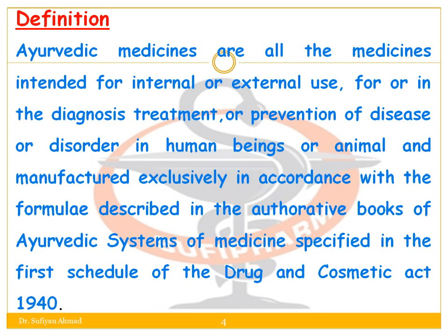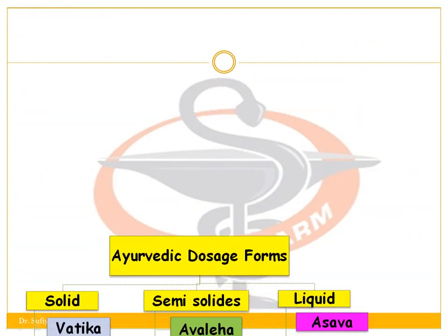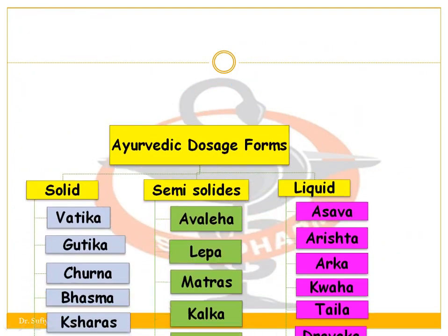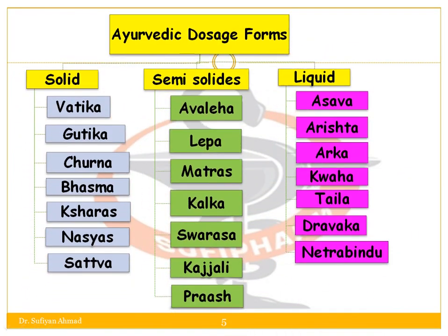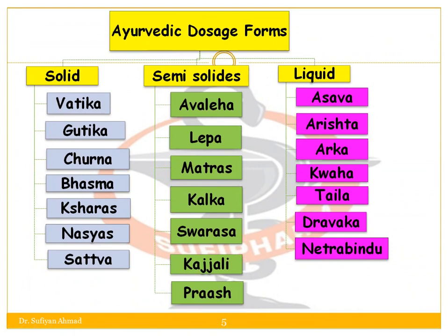Classification of Ayurvedic dosage forms: it can be classified as solid dosage form, semi-solid dosage form, and liquid dosage form. First, the solid dosage form — in that, Vatika.